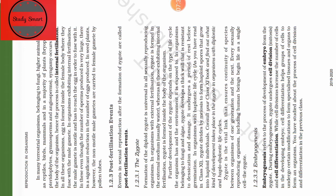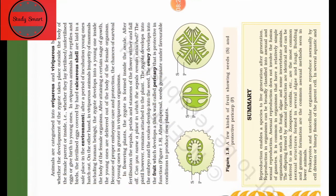Now we go through embryogenesis. Embryogenesis is the process in which development of the embryo from the zygote occurs. During embryogenesis, the zygote undergoes cell division by mitosis and cell differentiation. While cell division increases the number of cells in the developing embryo, cell differentiation helps groups of cells to undergo modifications to form specialized tissues and organs.